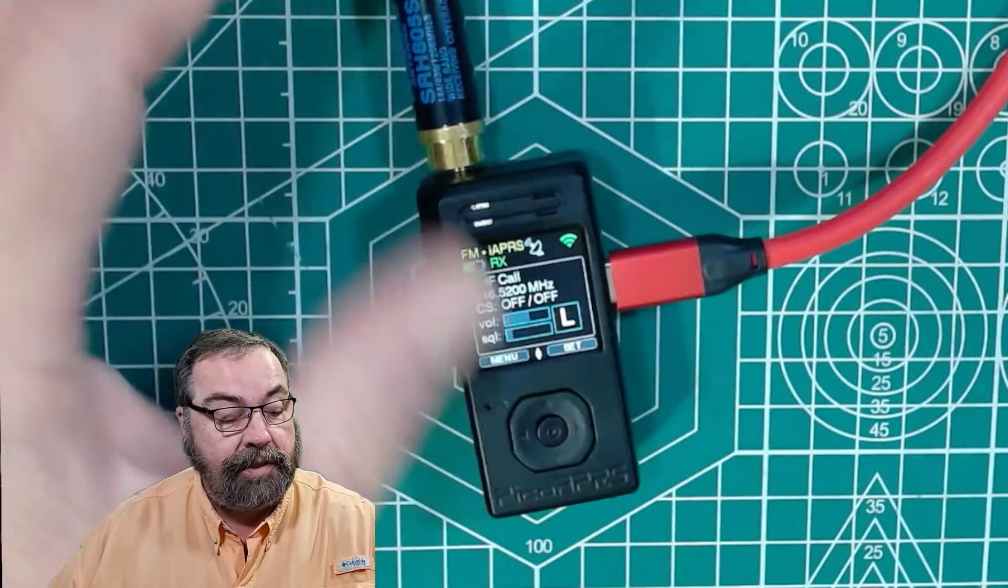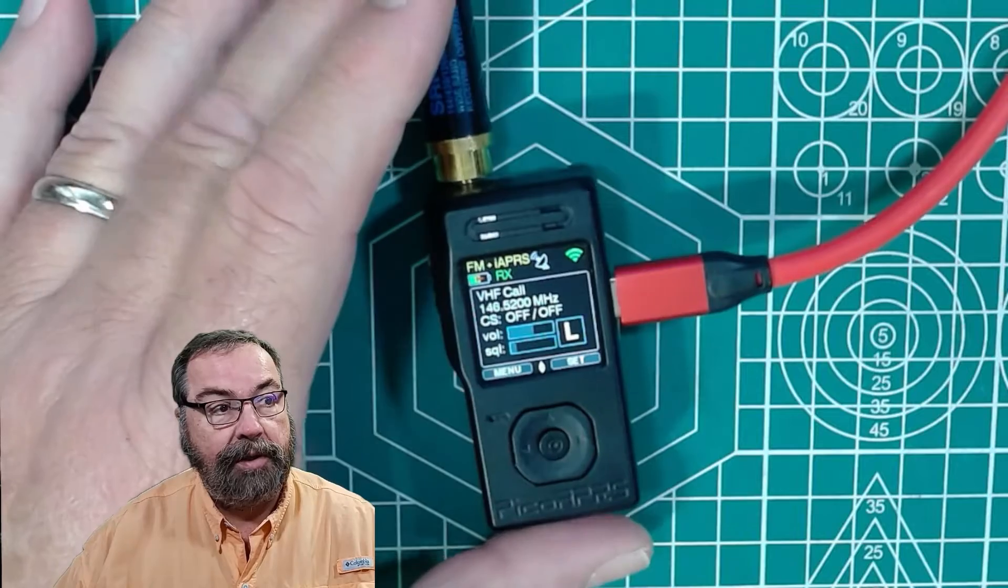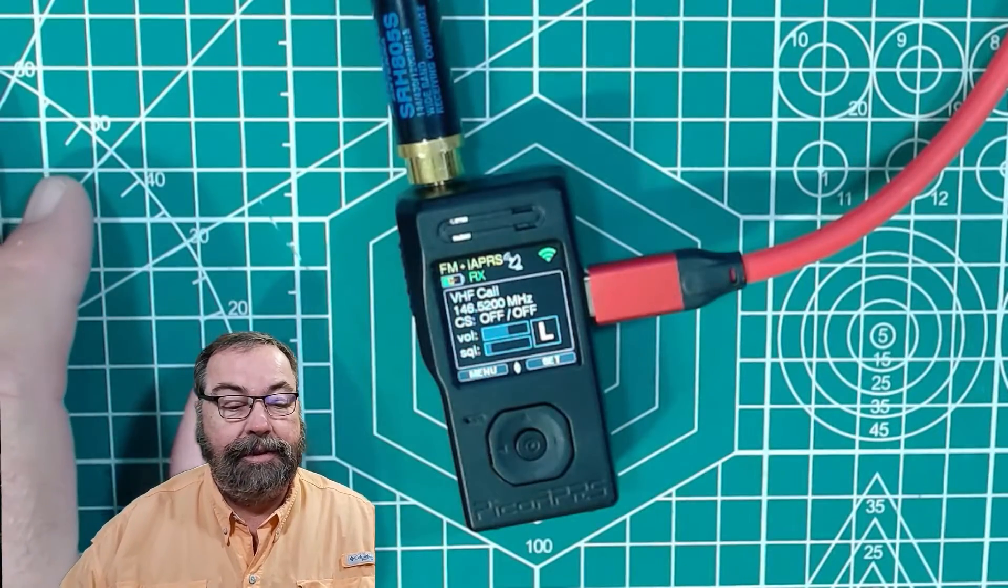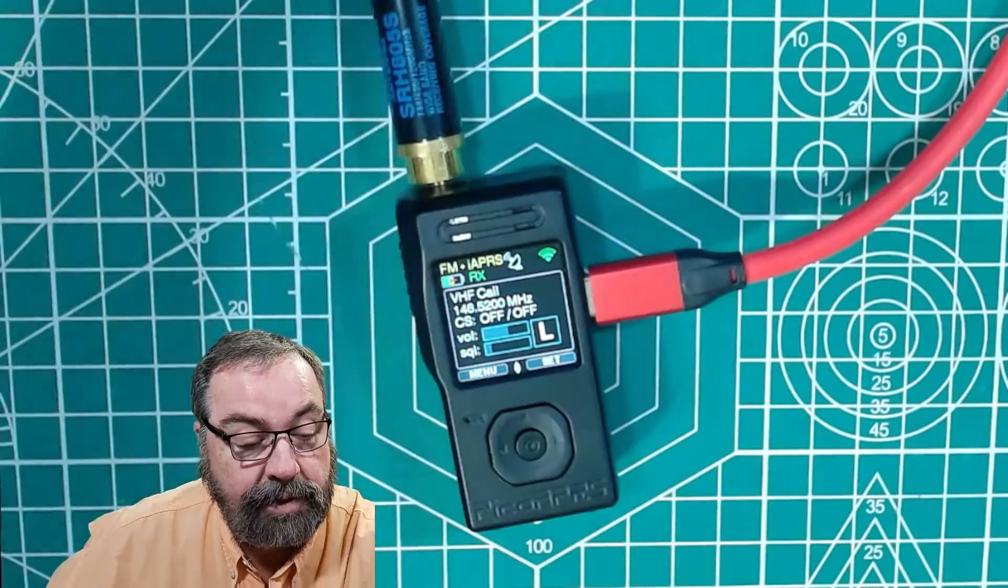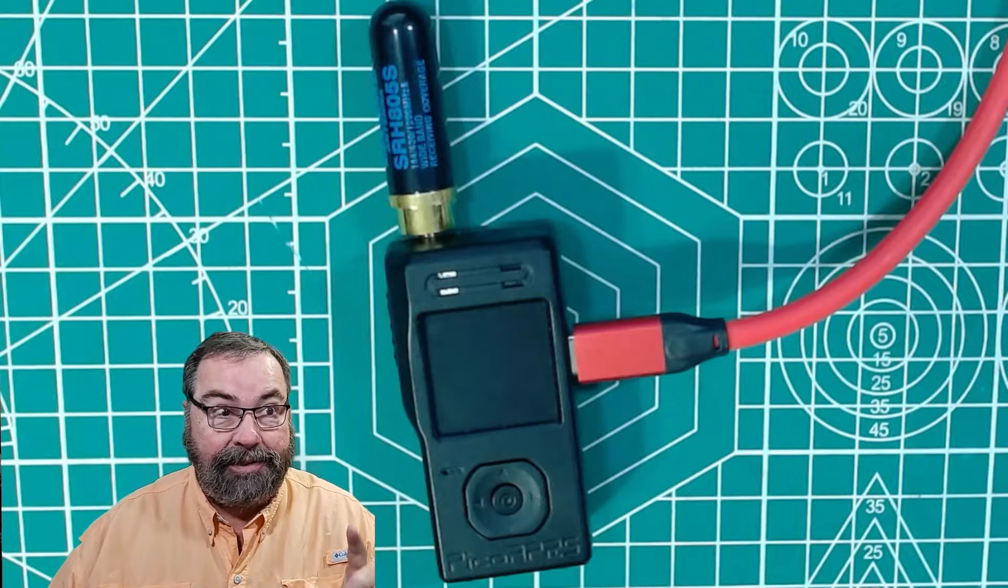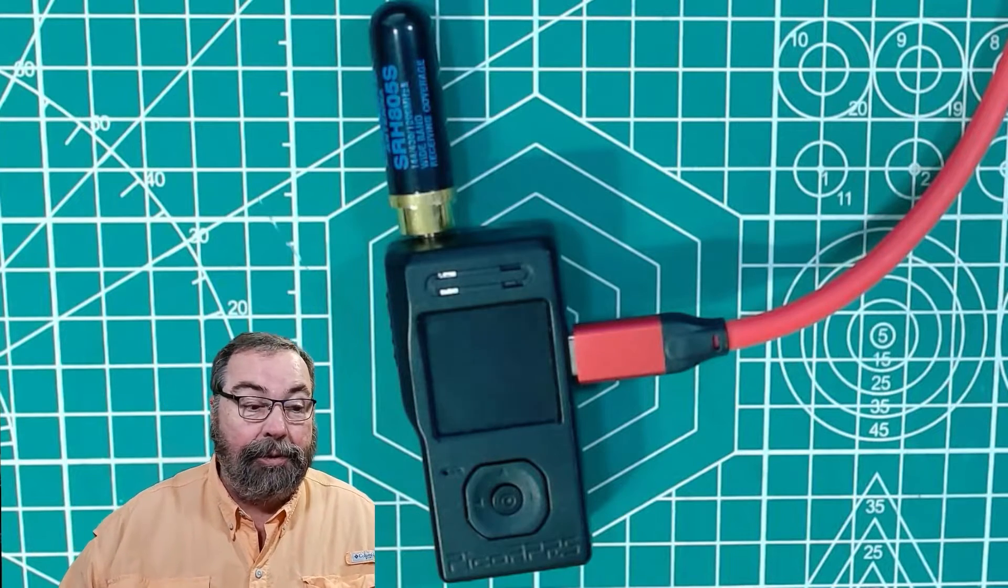The device itself is fairly small. You can see it's about three inches long by about an inch and a half to two inches wide. The device comes in a small box with a charging cable. It does not come with an antenna. You will have to get an antenna on your own.